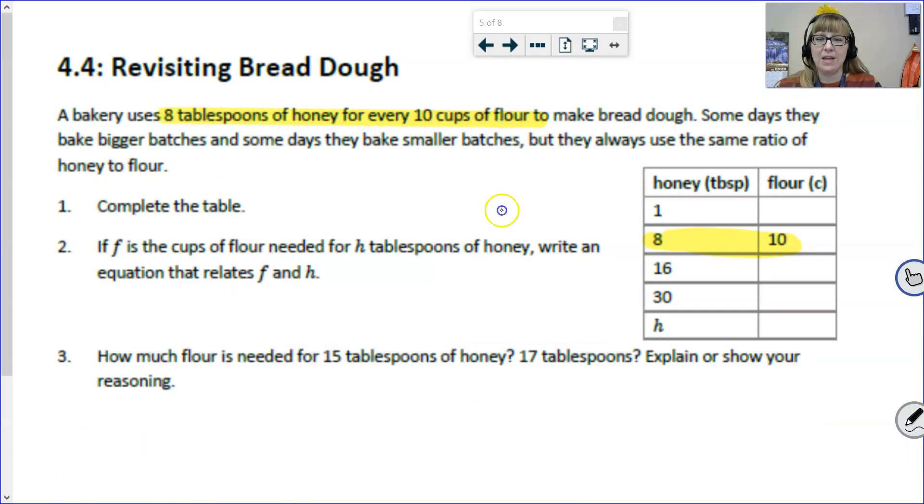Let's go back. 8 tablespoons of honey for every 10 cups of flour. So, we have different batch sizes here. We need to start by asking ourselves, how does an 8 change to a 10? Again, if you don't know, use the strategy we've used in the past and work backwards. Use that to fill in the rest of the table. Now, we have this H. What am I going to do with that H? Well, part 2 says we need to write an equation. Here's your hints. F is the cups of flour needed. Here's the cups of flour column. That means I'm going to give this the label of F. Here, it says F is the cups of flour needed for H tablespoons of honey. That means tablespoons of honey is going to get the label H. That should be enough of a hint to help you write your equation. So, I want you to pause the video, fill out the table, see if you can write the equation, and then return to the video.